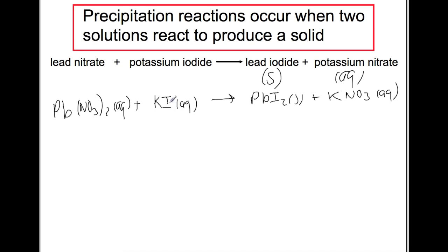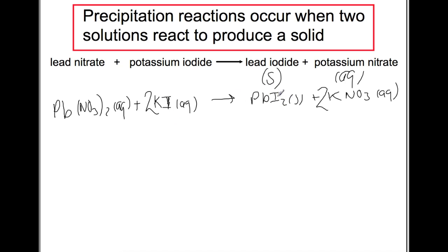You need to balance this — if you're unfamiliar with balancing go and watch that video, I'll put a link in the corner. We start by balancing the metals, which are already balanced here, so we look next at the group ions. Nitrate has two on the left and one on the right, so we put a 2 in front of KNO₃, which unbalances potassium. We put a 2 in front of KI to balance that, which also balances the iodine on the right-hand side.